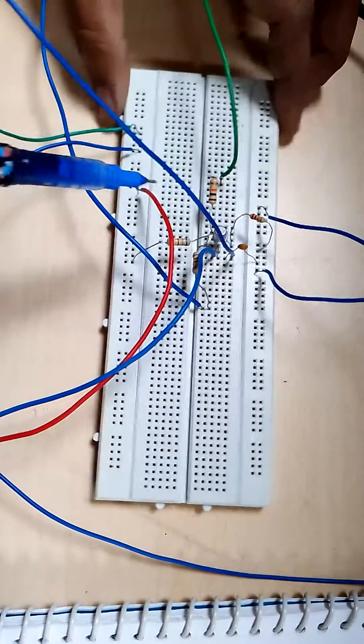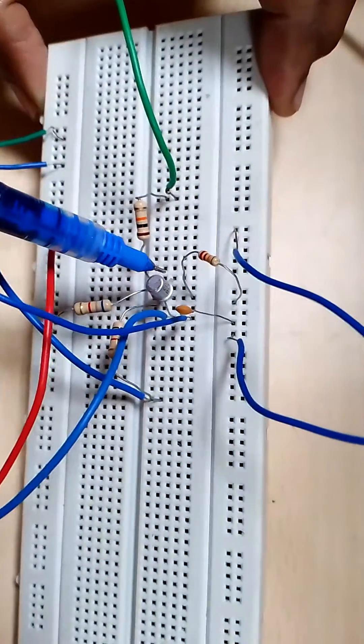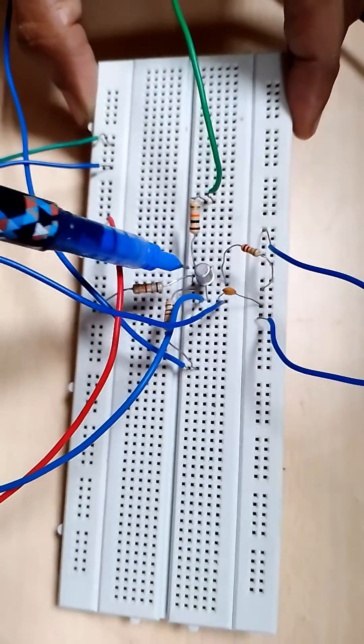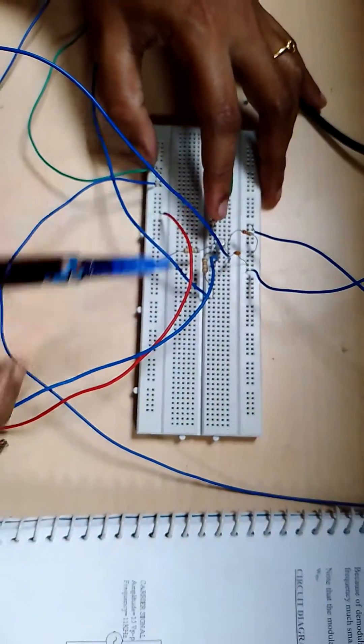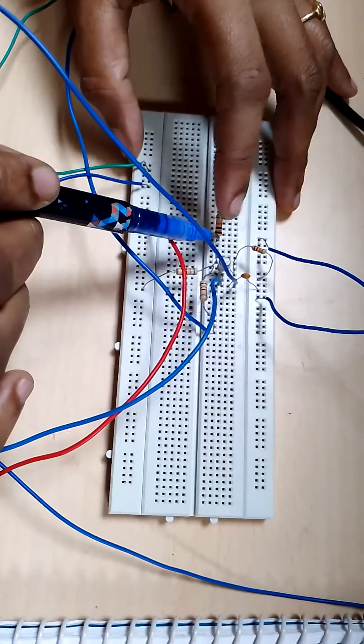BC 107 - there is a pointed knob. From the pointed knob, starting with the emitter: emitter, base, collector. Let us see the connections. From the emitter, we have connected a 10 kilo ohms resistance.